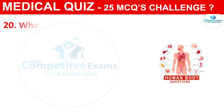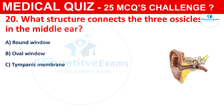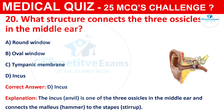Question 20: What structure connects the three ossicles in the middle ear? The options are Round Window, Oval Window, Tympanic Membrane, or Incus. The correct answer is D, that is Incus. The incus is one of the three ossicles in the middle ear and connects the malleus (the hammer) to the stapes.